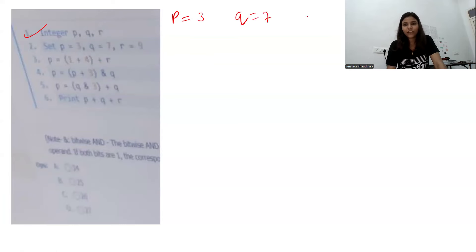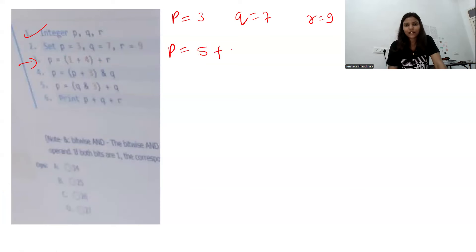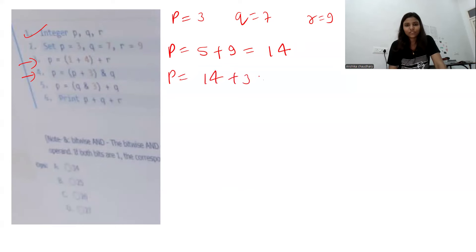Let's start with the very first question. Initially we have three integers p, q, r and we are setting p equals to 3, q equals to 7, and r equals to 9. At line number 3 we are performing some operations and updating the value of p. p will become 1 plus 4 that means 5, plus r which is 9, so p becomes 14.